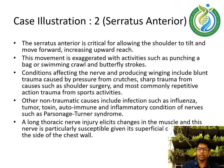Case illustration 2 — Serratus Anterior. The serratus anterior is critical for allowing the shoulder to tilt and move forward, increasing upward reach. This movement is exaggerated with activities such as carrying a bag or swimming crawl and butterfly strokes. Conditions affecting the nerve include blunt trauma from crutches, sharp trauma from shoulder surgery, and repetitive action trauma from sports. Non-traumatic causes include infections such as influenza, tumour, toxin, and autoimmune conditions such as Parsonage-Turner syndrome. A long thoracic nerve injury produces changes in the muscle; this nerve is particularly susceptible given its superficial course along the side of the chest wall.